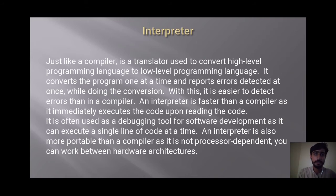Interpreter. Just like a compiler, is a translator used to convert high-level programming language to low-level programming language. It converts the program one at a time and reports errors detected at once while doing the conversion. With this, it is easier to detect errors than in a compiler. An interpreter is faster than a compiler as it immediately executes the code upon reading the code. It is often used as a debugging tool for software development as it can execute a single line of code at a time. An interpreter is also more portable than a compiler. It is not processor-dependent. You can work between hardware and architecture.